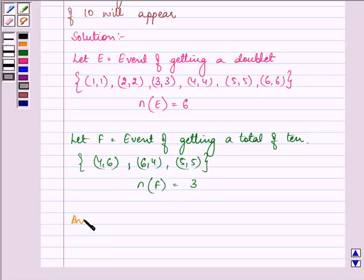And the total number of elements in the whole sample space, n(S), is equal to 36, as there is a throw of two dice.